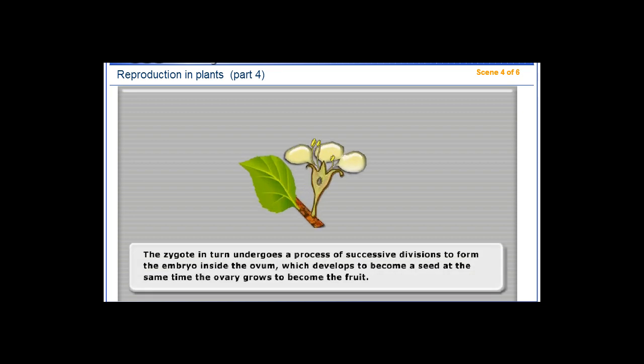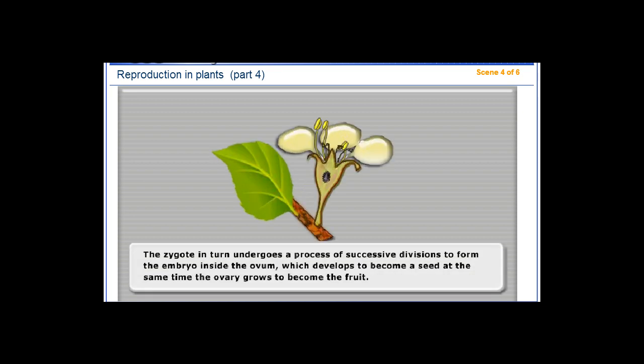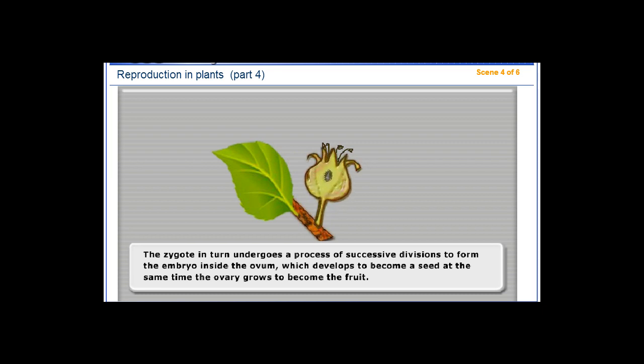The zygote in turn undergoes a process of successive divisions to form the embryo inside the ovum. The ovum develops to become a seed, and at the same time the ovary grows to become the fruit.